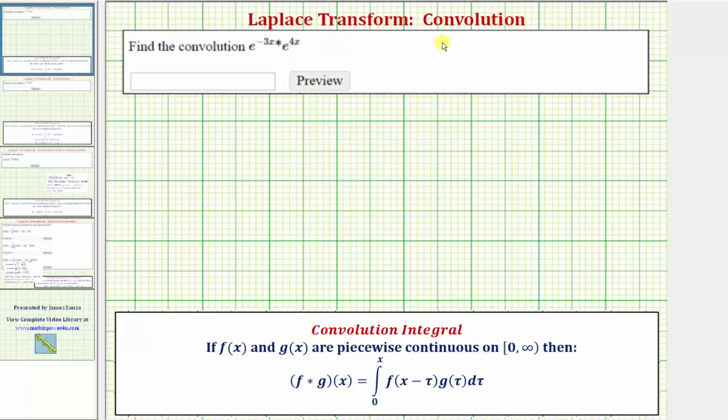Looking at our notes below, if f of x and g of x are piecewise continuous on the interval from zero to infinity, then the convolution integral is given here. So to find the convolution of e to the negative 3x and e to the 4x, we want to evaluate this integral.